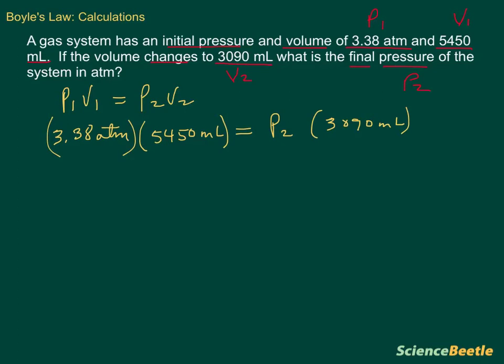Now in order for us to get the P2 by itself, we do need to divide by the volume 2 on the right-hand side. So we'll do that now. We're going to go ahead and divide by 3890 milliliters. And what that does is that causes these volumes to cancel. And when it cancels, essentially we're left with P2 on the right-hand side.